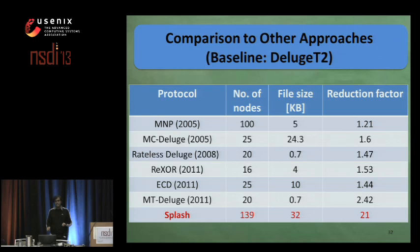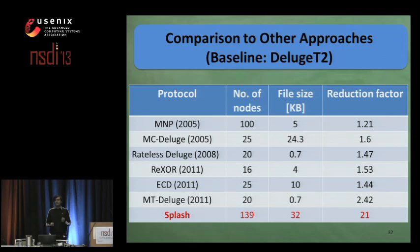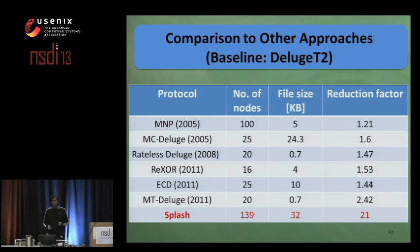Whereas for SPLASH it is a significantly larger value of 21, despite the fact that SPLASH is evaluated on the largest number of 139 nodes and using the largest file.